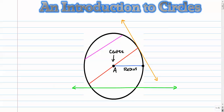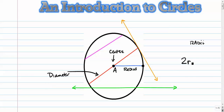The blue one is a radius, and remember the plural of radius is radii. The red segment here is a chord, but more specifically it's a diameter. The relationship between a radius and a diameter is that there are two radii in the diameter. A chord is defined as a line segment that has endpoints on the circle, and yes, a diameter is a chord — it's the longest chord in any circle.